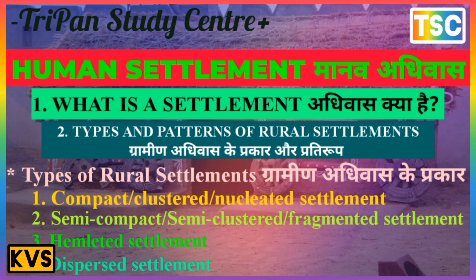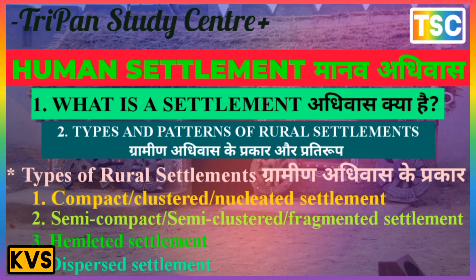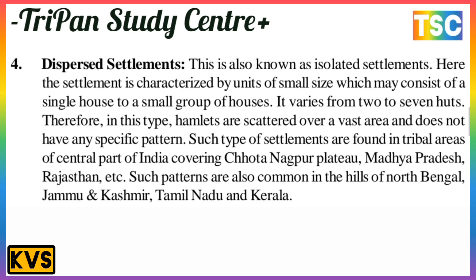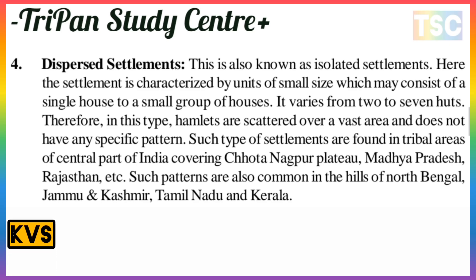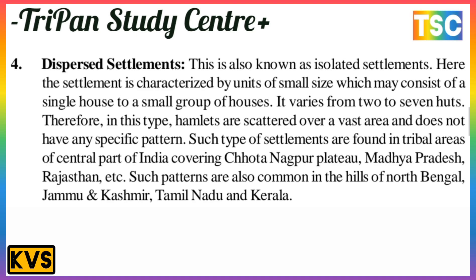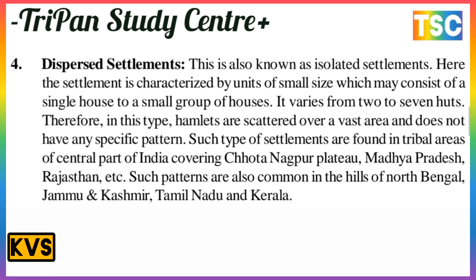Dispersed or isolated settlement: this is also known as isolated settlement. Such settlements are characterized by units of small size, which may consist of a single house or a small group of houses — ranging from two to seven huts. Therefore, hamlets are scattered over a wide area and do not have any specific pattern. This type of settlement is found in tribal areas in the central part of India, covering the Chota Nagpur plateau and Madhya Pradesh, Rajasthan, etc. Such patterns are also common in the hills of north Bengal, Jammu and Kashmir, Tamil Nadu, and Kerala.